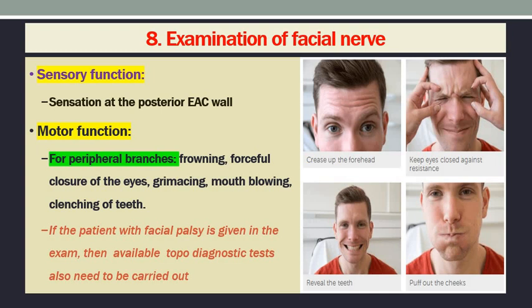Examination of the facial nerve is usually performed last. The facial nerve has both sensory and motor functions, but motor function is more significant. The sensation at the posterior auricular canal wall is to be assessed. Motor function is tested via peripheral branches: frowning to assess the forehead crease, forceful closure of the eyes against resistance, grimacing, mouth blowing, or showing the teeth — all can be performed to assess peripheral branch function. If a patient with facial palsy is presented in the exam, clinical topodiagnostic tests also need to be carried out. Thank you so much, have a good day and do well in the practicals.